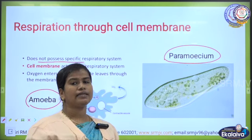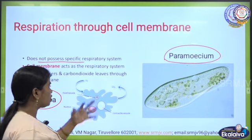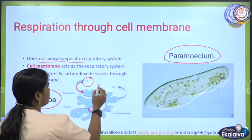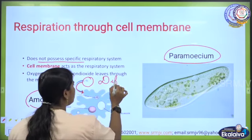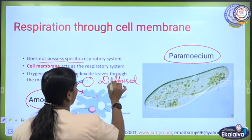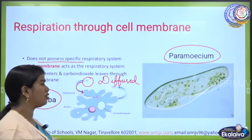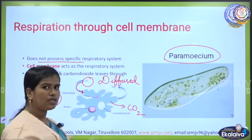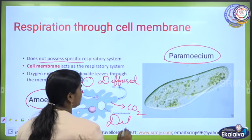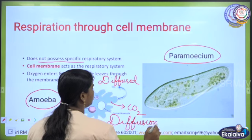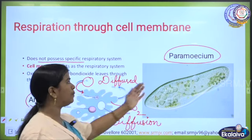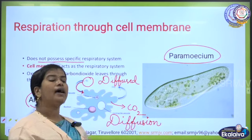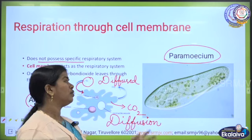The cell membrane acts as a respiratory system for them. As you can see in this picture, oxygen enters into the body through diffusion. Oxygen will diffuse into the body of the unicellular organism, and carbon dioxide — CO2 — will also be released out through the process of diffusion. This is applicable for paramecium as well — oxygen enters and CO2 diffuses out through diffusion.